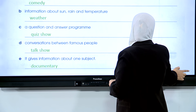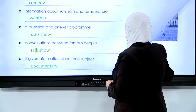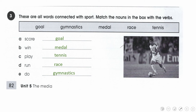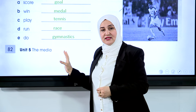These are all words connected with sport. Match the nouns in the box with the verbs. هذه الكلمات ترتبط بالرياضة: goal - هدف، gymnastics، medal - ميدالية، race - سباق، tennis. الروابط: score a goal - يسجل هدف. win a medal - يربح ميدالية. play tennis - يلعب تنس. run a race - يرتبط بالسباق. do gymnastics - يرتبط بالجيمناستيكس.